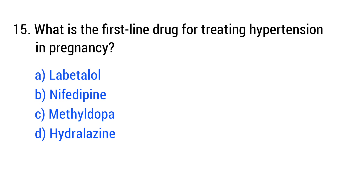Question No. 15. What is the first-line drug for treating hypertension in pregnancy? The right answer is option C: Methyldopa.